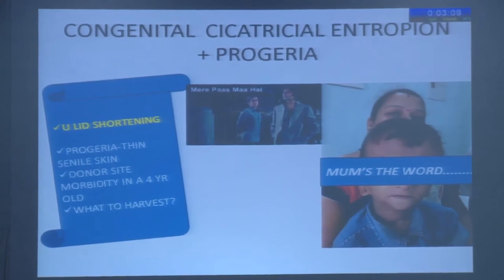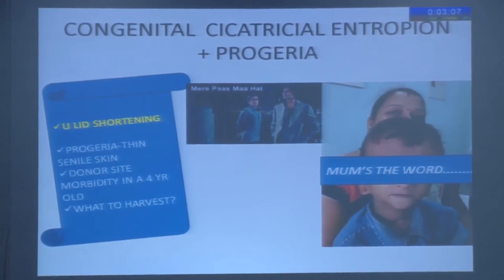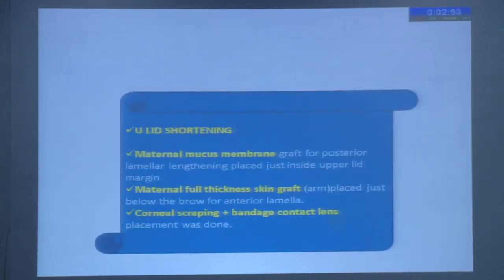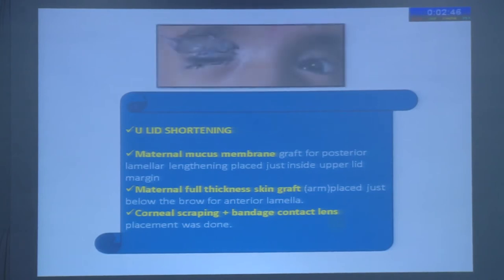So what do we do when we don't have any other options? We looked at a maternal donor. Oral mucosa harvesting in such a small child with fragile senile skin was a matter of concern, so we went for a maternal mucous membrane and a maternal full-thickness skin graft harvest to deal with this condition.